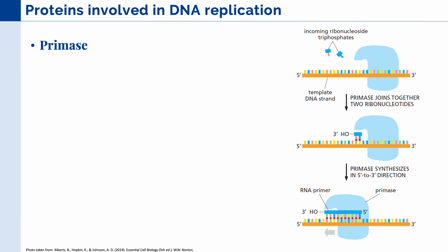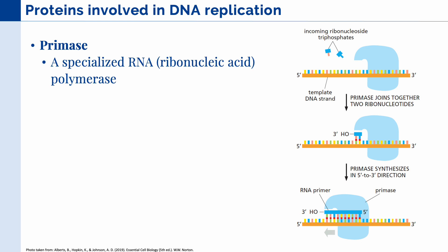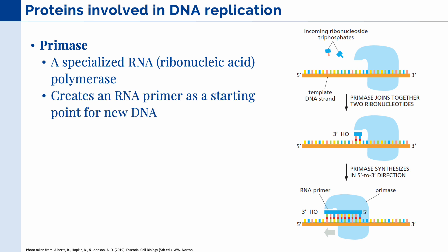The next protein involved in DNA replication is primase, a specialized RNA polymerase. Instead of creating DNA, it creates an RNA primer, which acts as the starting point for new DNA, because DNA polymerase cannot start a DNA strand on its own. Usually, RNA primers are around 10 base pairs long. In the leading strand, there is usually only one primer created, but in the lagging strand, primase is highly active, creating primers at each Okazaki fragment.